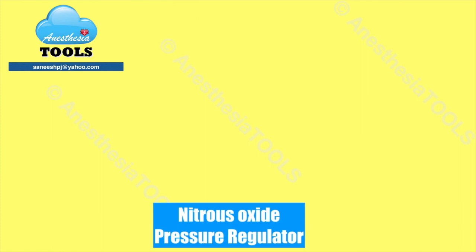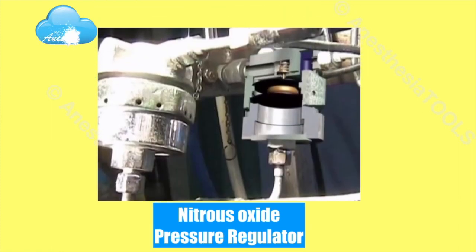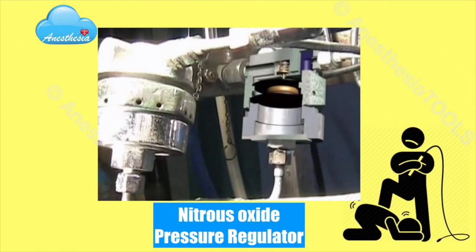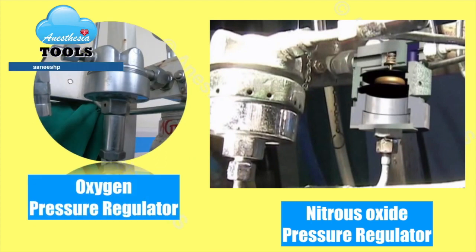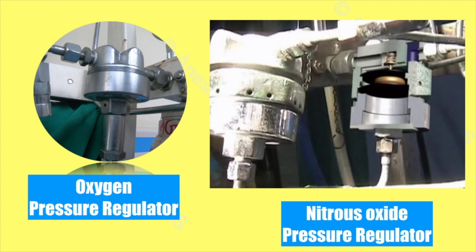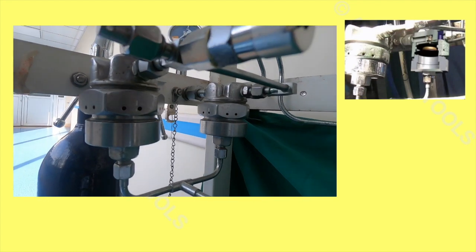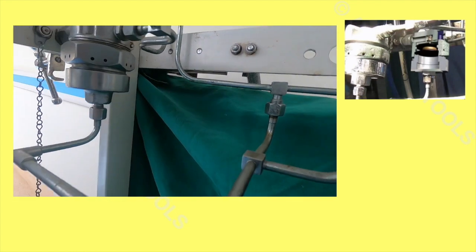Now, what is special about the nitrous oxide pressure regulator, and why is it called a slave regulator? From the external features, we can see that the oxygen pressure regulator has two chambers, while the one for nitrous oxide has three chambers. You can trace the inlet at the bottom of the nitrous oxide regulator to the oxygen pressure regulator output.